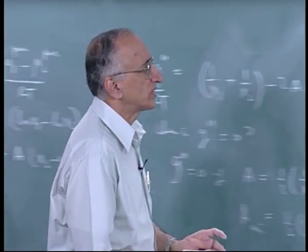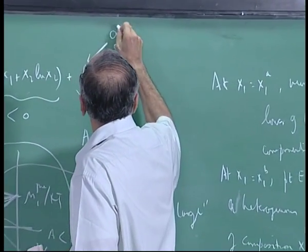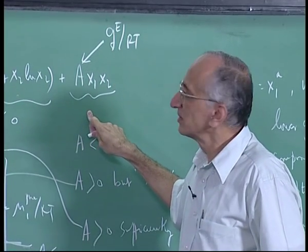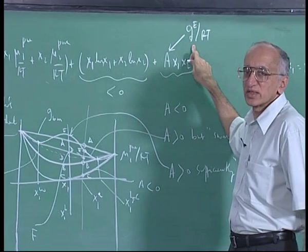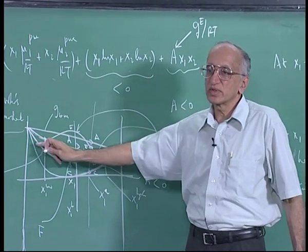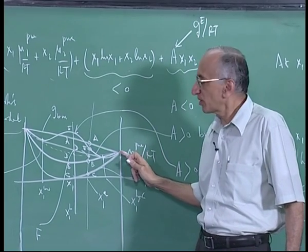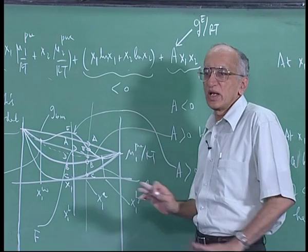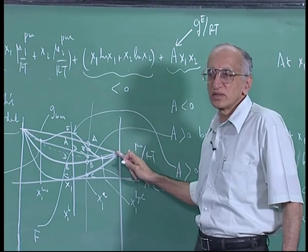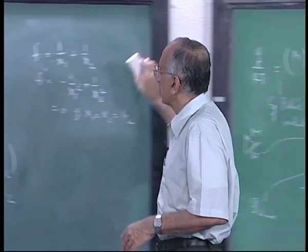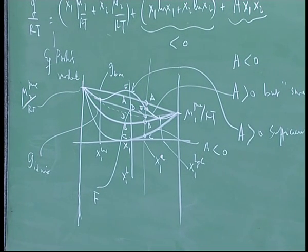The procedure is the same for all GXS models. You always write G/RT with the before-mixing straight line term, always add the ideal mixing term X1 log X1 plus X2 log X2, and then add GXS/RT, which is the model-dependent term. Depending on parameter values and the shape of GXS/RT as a function of composition, you get different curves. If the net free energy always lies below the before-mixing line, you have complete solubility. Any time it crosses the before-mixing line, you have immiscibility.